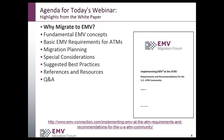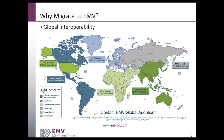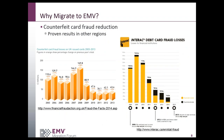Many countries around the world have already implemented EMV, and as a result, the U.S. has become a significant target for counterfeit fraud. Visitors to the U.S. can use their chip cards at U.S. terminals because their cards have a magnetic stripe, but the non-U.S. card issuer may be reluctant to approve a transaction originating in the U.S. Countries that have implemented EMV have experienced a remarkable decrease in counterfeit card fraud, while those who have not migrated are seeing exponential growth.